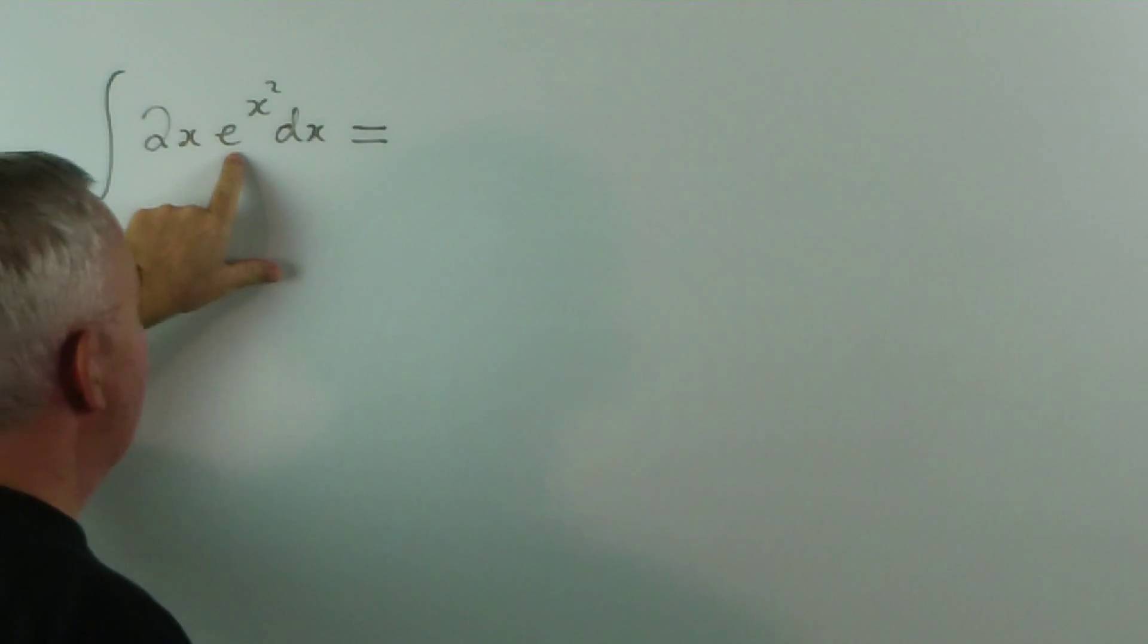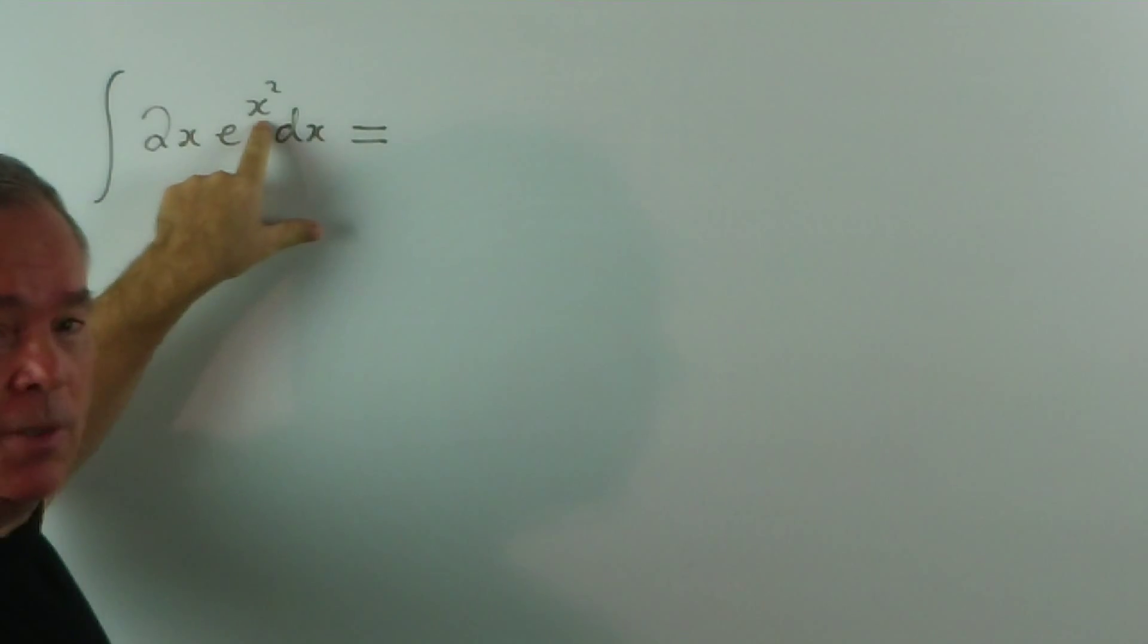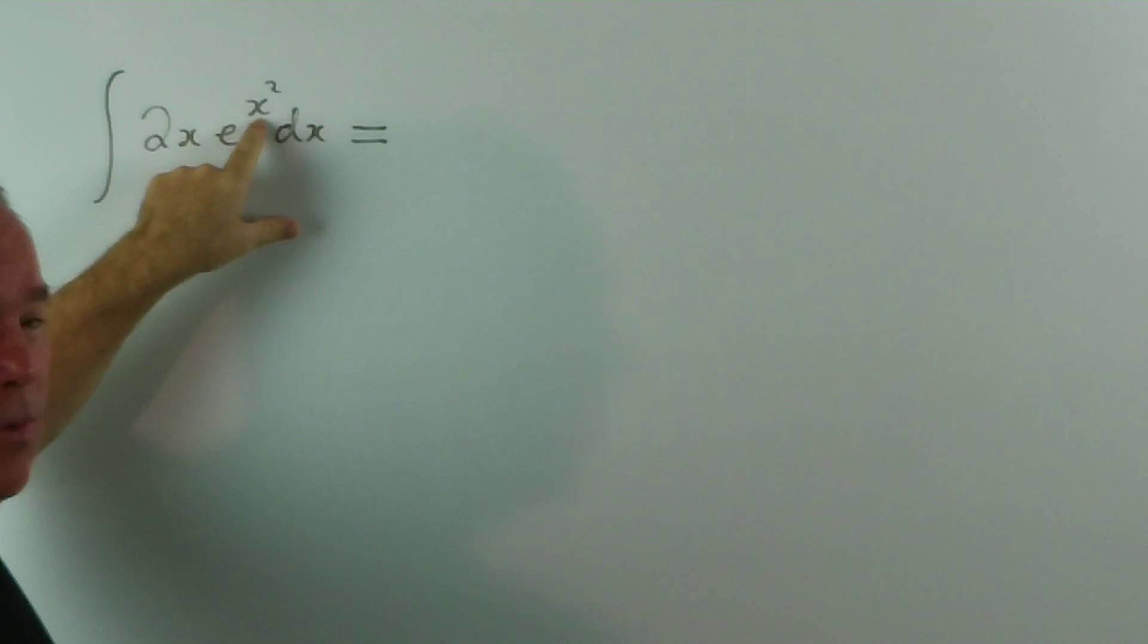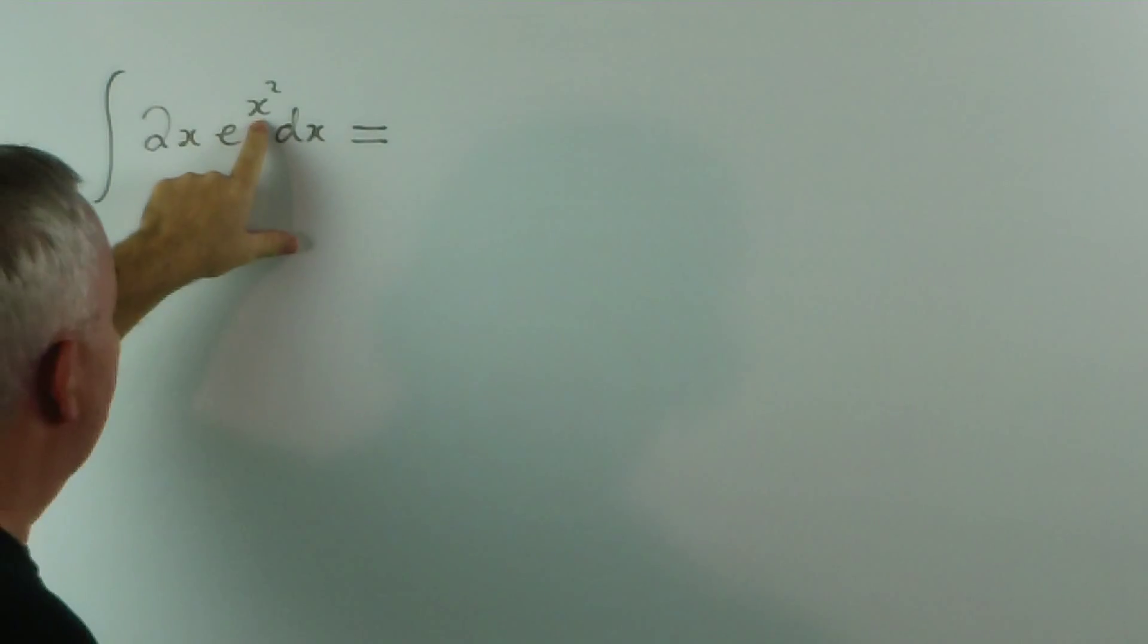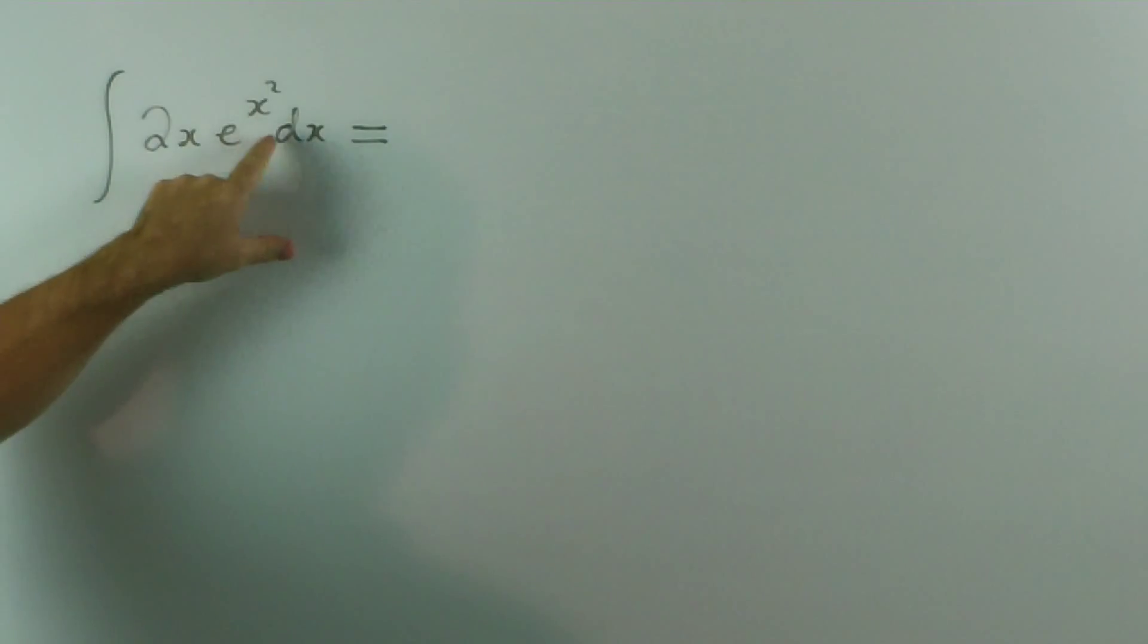The first reaction to that is to notice we have an exponential to some function. And my first reaction is to say, does the derivative of that function exist out the front? Now, in this particular case, we've hit the nail on the head instantly, because the derivative of x squared is 2x.